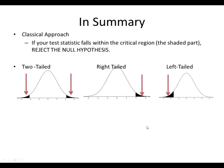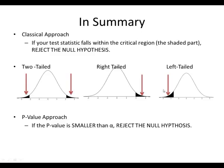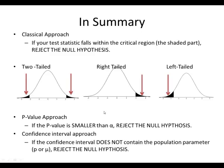In summary: for the classical approach, if your test statistic falls in the shaded critical region, you reject. If the p-value is smaller than alpha, then you reject. If your confidence interval does not contain the population parameter, then you reject.